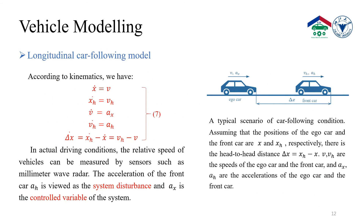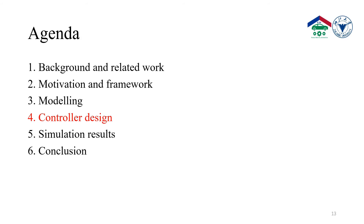The fourth model is the longitudinal car-following model. The picture shows a typical scenario of a car-following condition, assuming that the positions of the ego car and the front car are x and x_h, respectively. The head-to-head distance is delta_x = x_h minus x. V and V_h are the speeds of the ego car and the front car, and a_x and a_h are the accelerations of the ego car and the front car, respectively. According to kinematics, we have equation 7.